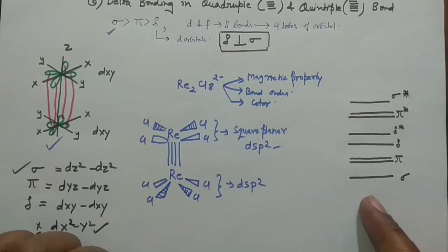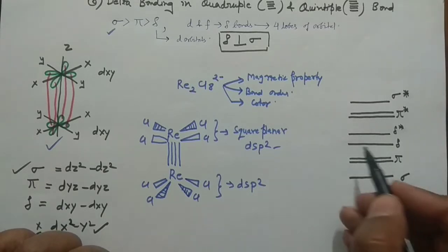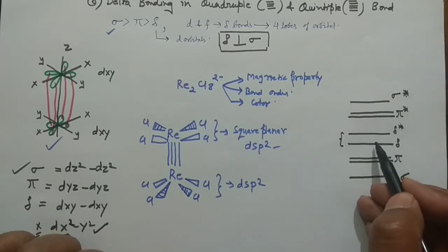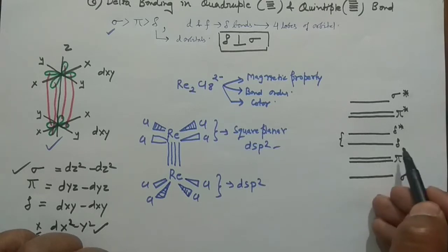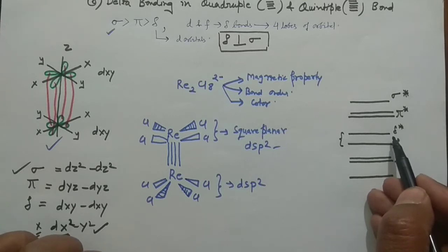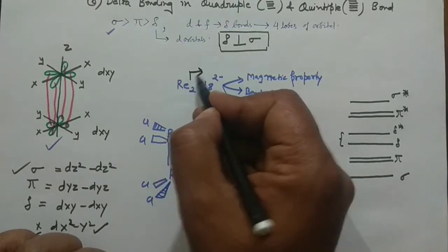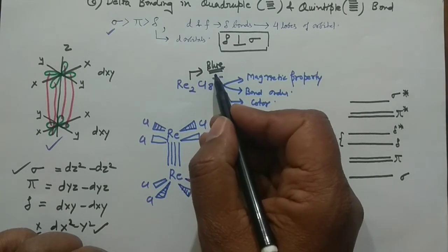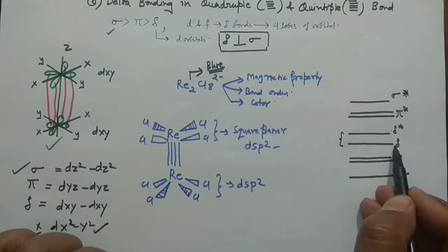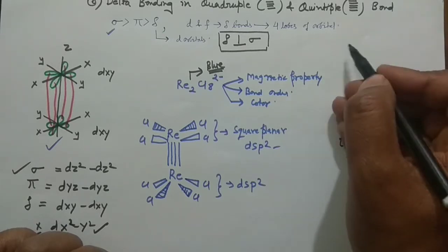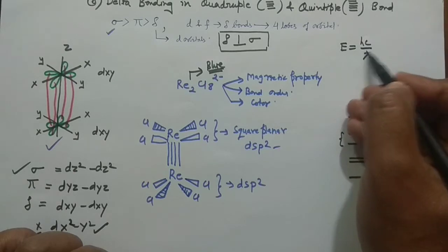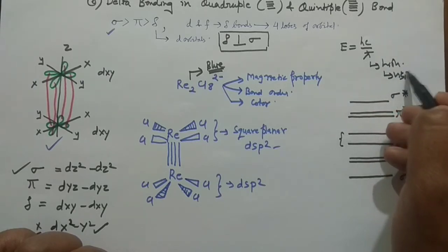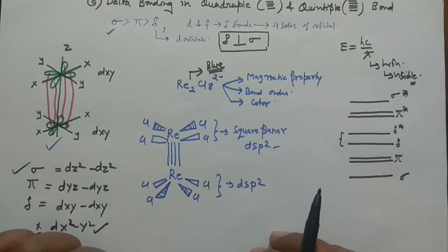The transition from delta bonding to delta antibonding is responsible for the color of these complexes. This rhenium complex is blue in color because electronic transition can occur between these two orbitals. Since the energy gap is very low, using E = hc/λ, the lambda becomes large and falls in the visible region, giving the complex its color.